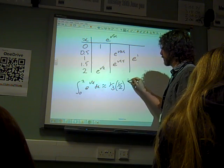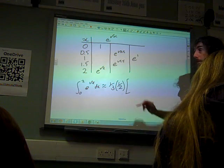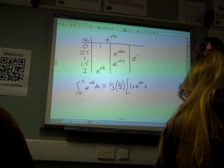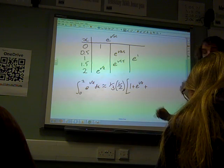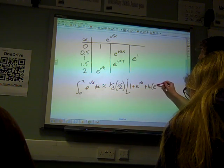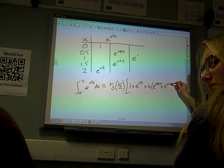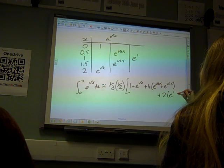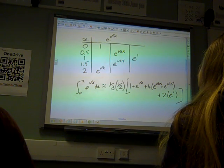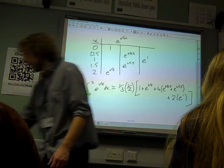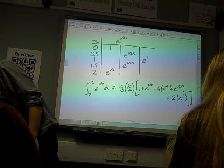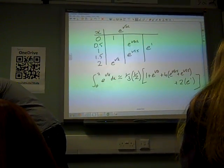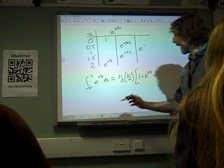times the first plus the last, so 1 plus e root 2, plus 4 times the next little set. So 4 times e to the root 0.5 plus e to the root 1.5, plus twice e to the 1, close up all the brackets. You put that in the calculator and it came out as 5.38.